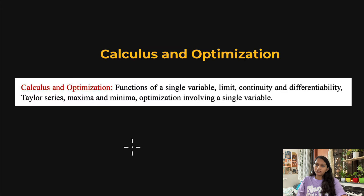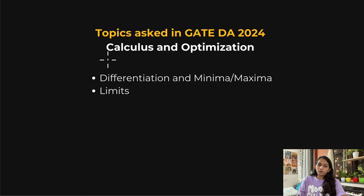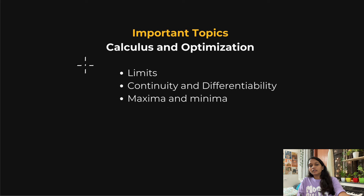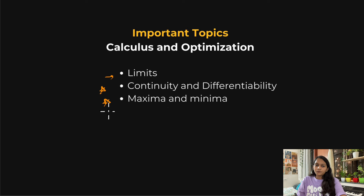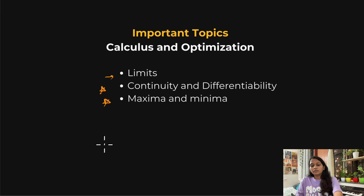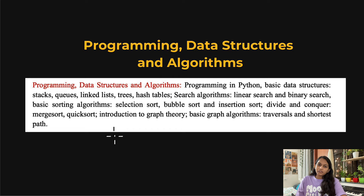For calculus and optimization, the official syllabus covers differentiation, maxima-minima, and limits. In GATE DA 2024, questions came from differentiation, maxima-minima, and limits. The important topics are limits, continuity and differentiability, and maxima-minima. Maxima-minima is very easy, and limits, continuity and differentiability is also easy. This calculus syllabus overlaps with the GATE CSE syllabus — limits, continuity, and maxima-minima are similar to GATE CSE.